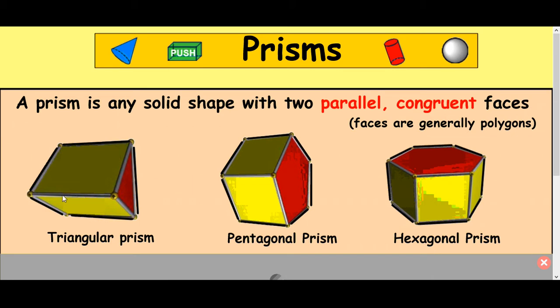So this one here, if we look at this one first, this is called a triangular prism. And if you look at the end bit there's a triangle and the other side of this shape, you can't see it here but that would be another triangle. And if you cut it through the middle there would be triangles of the same size all the way through the shape.